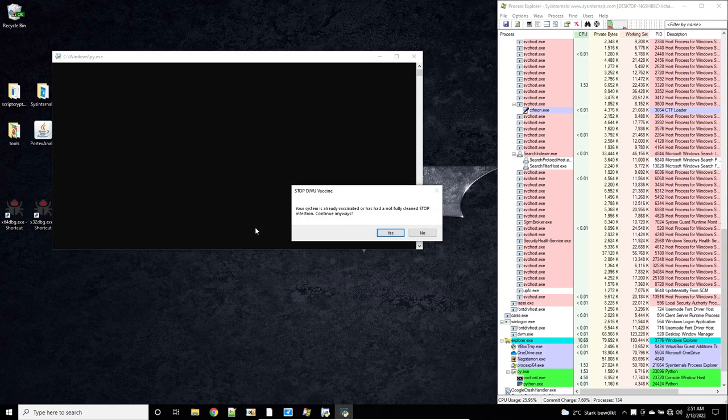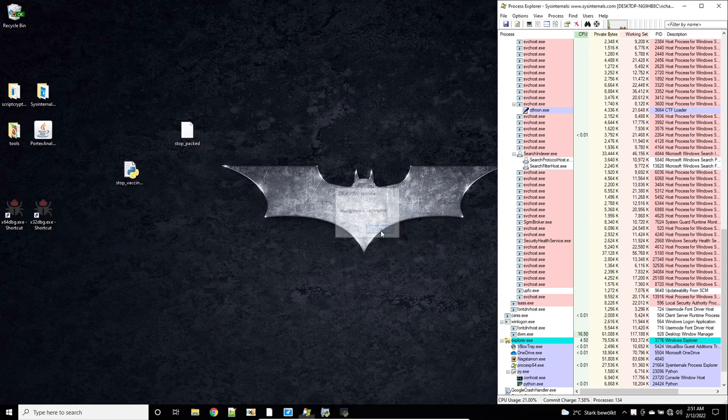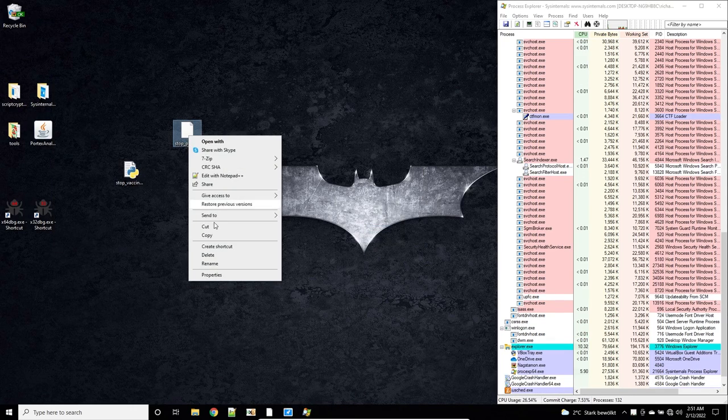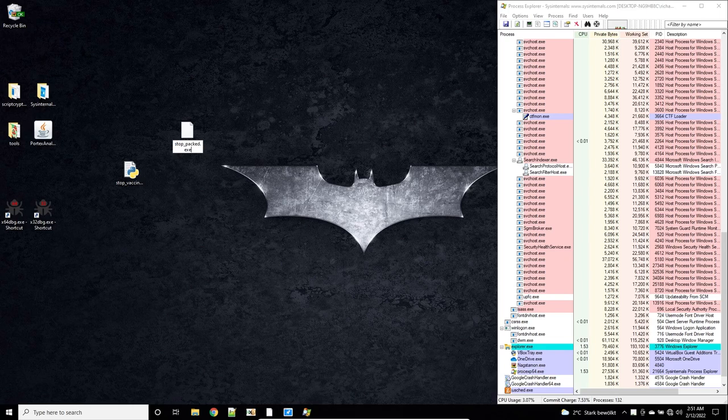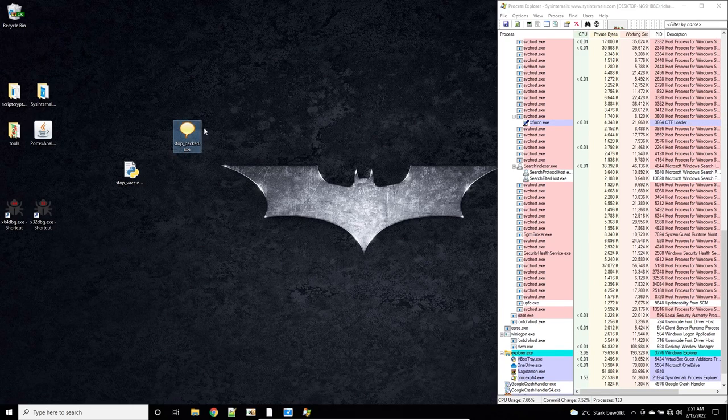Let's now take a look at an example vaccine that John Parole and me created for STOP Djvu ransomware. This vaccine creates a file with a specific filename that is used by STOP ransomware to save the encryption key.